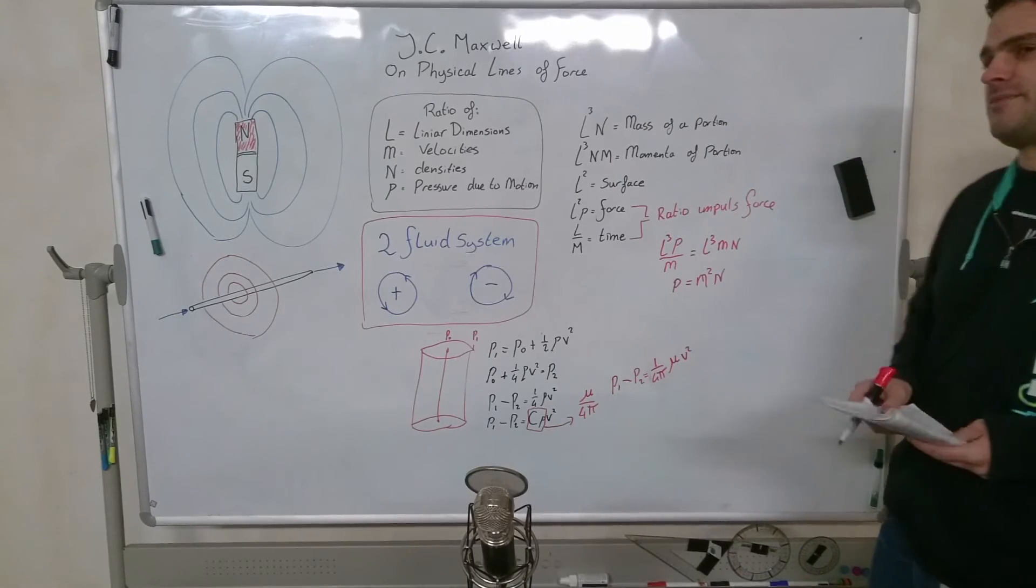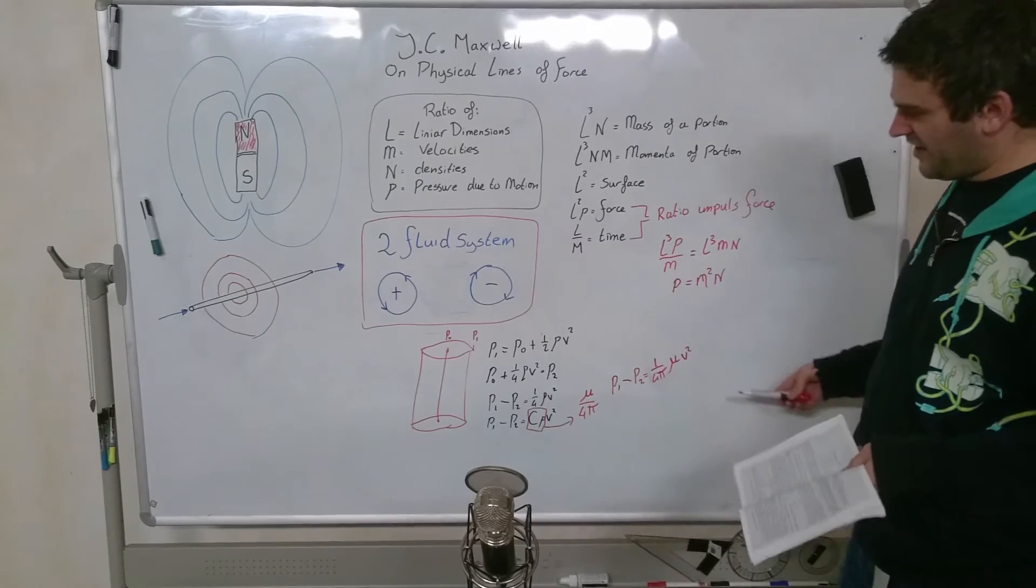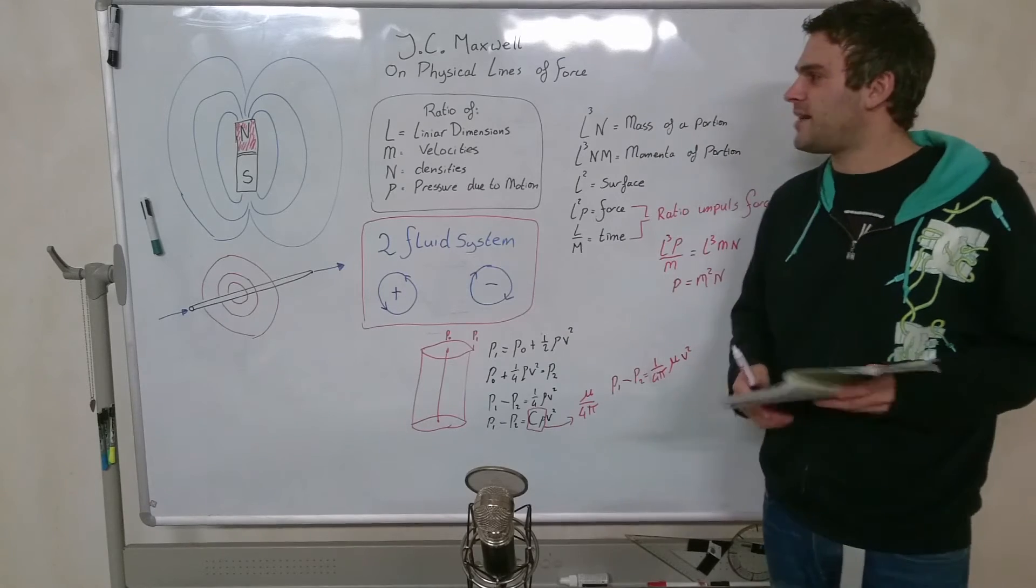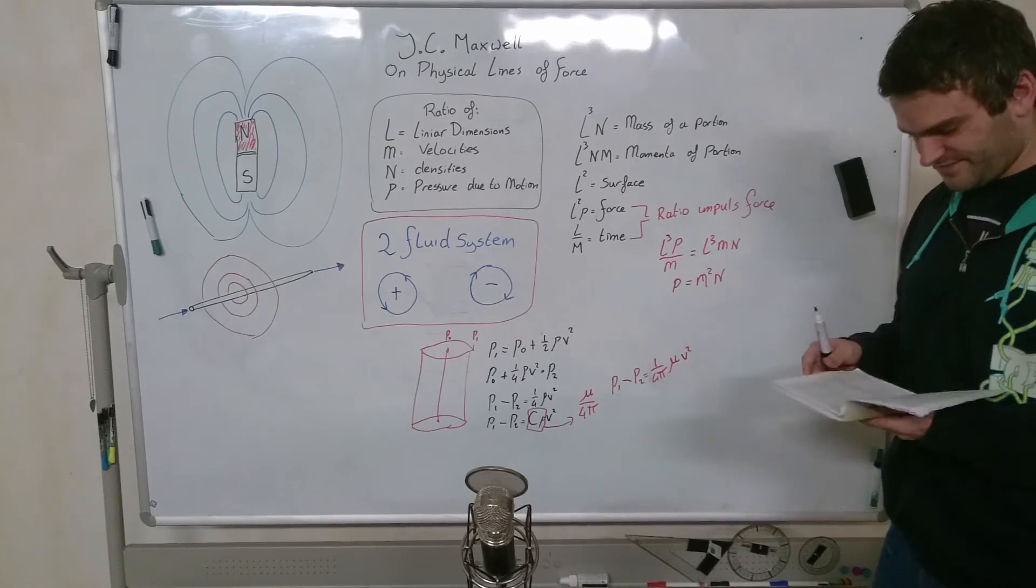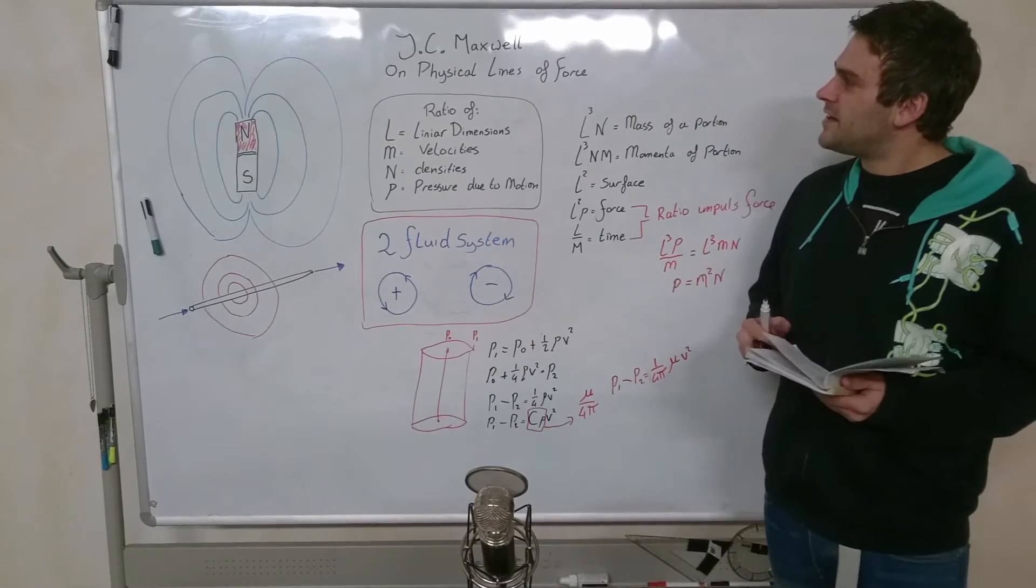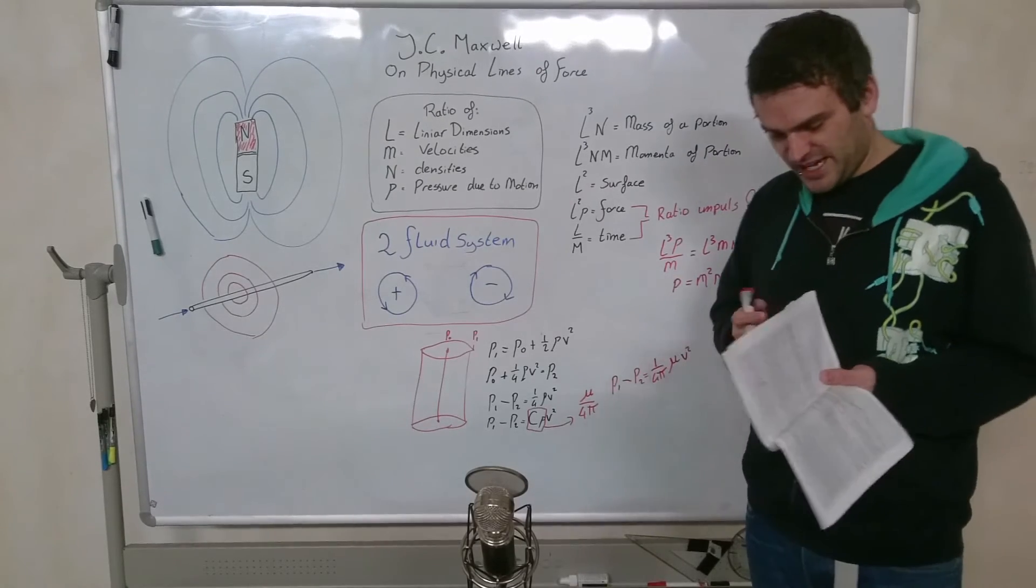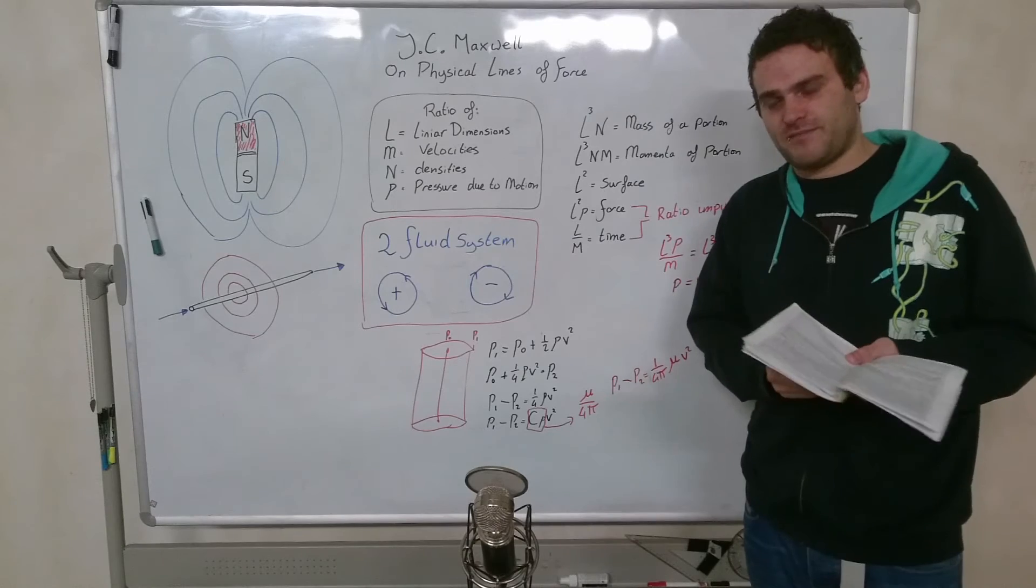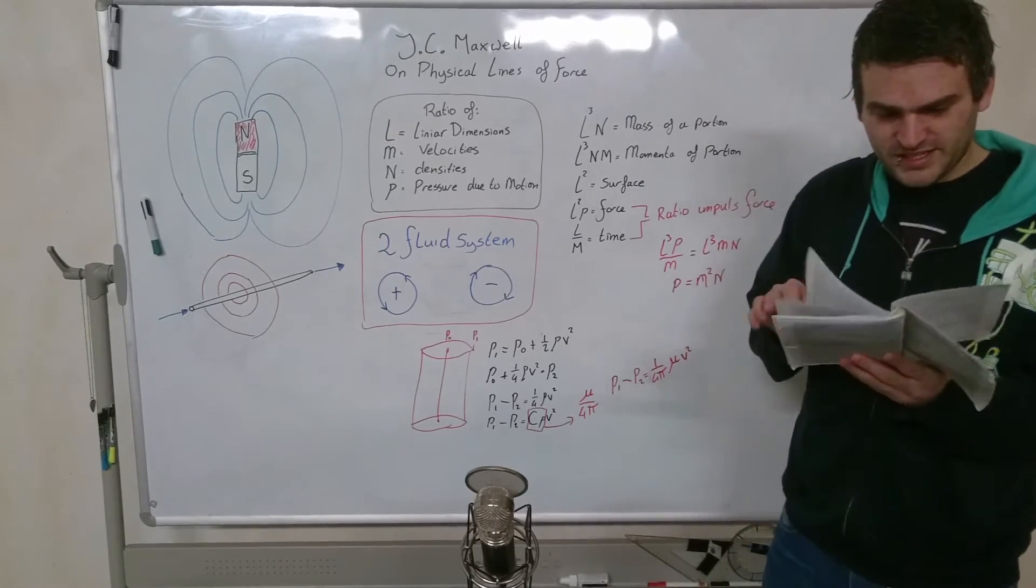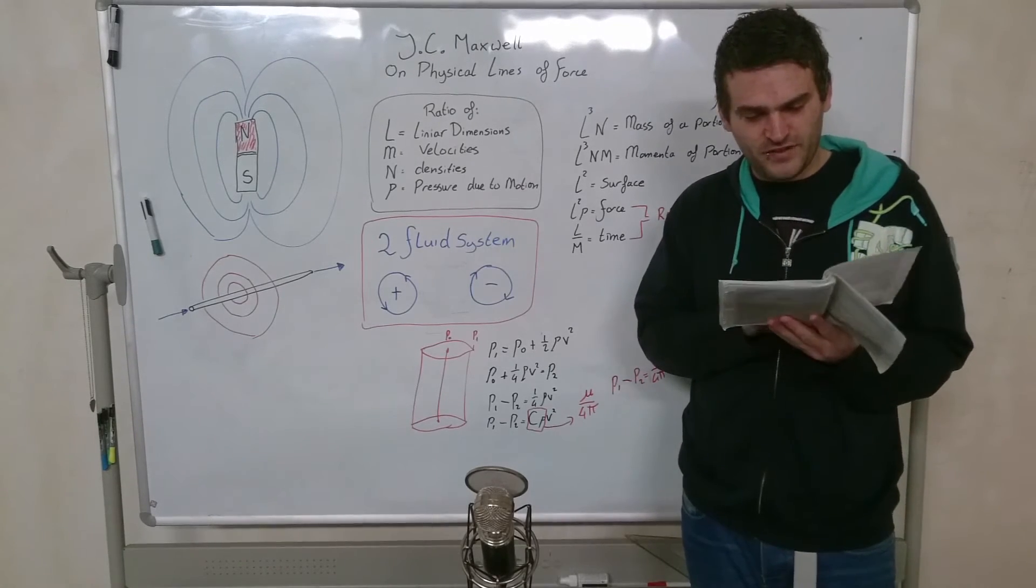So this is his proposition 1. And as you can see, I already tried explaining this part in an older video of mine. And I thought it would be interesting to continue this idea today in the physical lines of force of James Clerk Maxwell. Maybe I should end this at proposition 1, and the next video would be his proposition 2. And I'm already looking forward to it, because it's going to be a hard video.